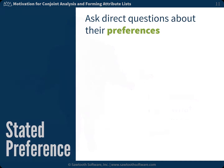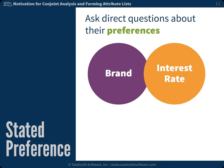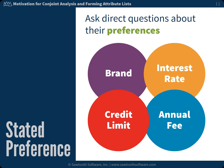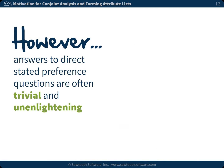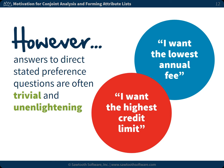We might think about asking direct questions about their preferences. These are known as stated preference questions — for example, which brand do you prefer? Which interest rate would you like? Which annual fee would you like? Which credit limit would you like? However, answers to direct stated preference questions are often trivial and unenlightening.